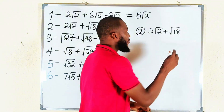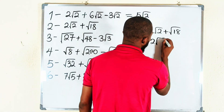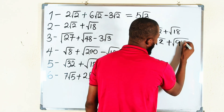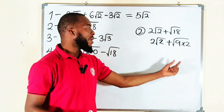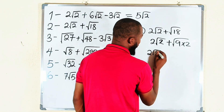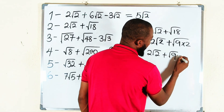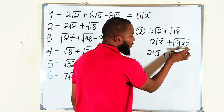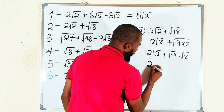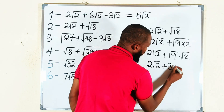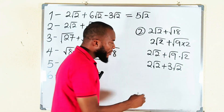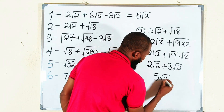Two times nine is 18, so you can convert square root of 18 into square root of nine times two. Whenever you have a square root of a product you can split it: square root of nine times two becomes square root of nine separately times square root of two. We know square root of nine is three, so you have two times square root of two, plus three times square root of two. Now you can see we have similar surds, and adding them gives five root two.